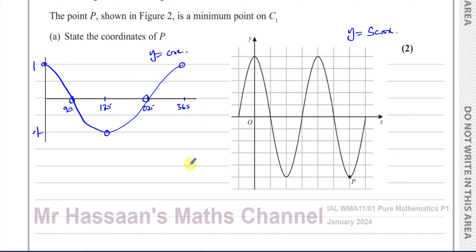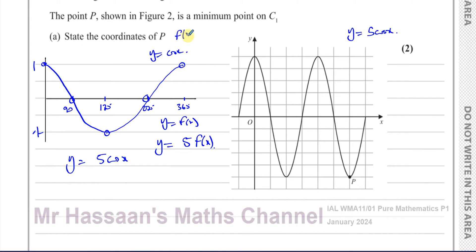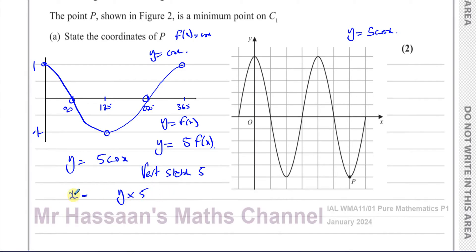Now when you have y equals 5 times cosine x, you've multiplied the whole function by 5 — it's like y equals 5 times f(x). So if f(x) was cosine x, what we've done is multiplied by 5, which represents a vertical stretch of factor 5. All the y-coordinates are multiplied by 5, while the x-coordinates stay as they are.